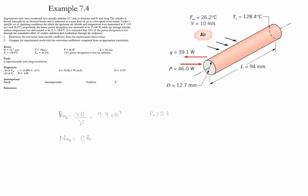C times Reynolds number to the M, Prandtl number to the N, and then we take the ratio of the Prandtl number of the fluid and the Prandtl number of the surface to the 1/4 power.